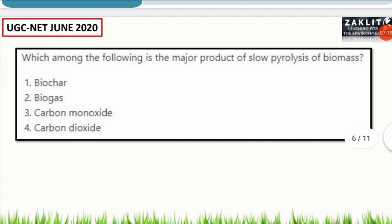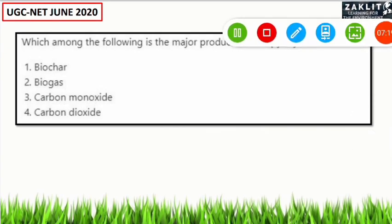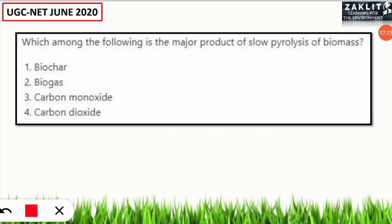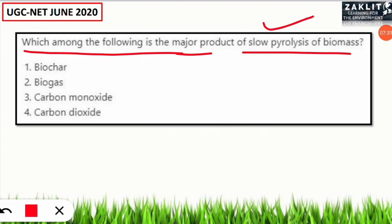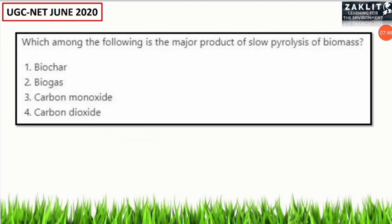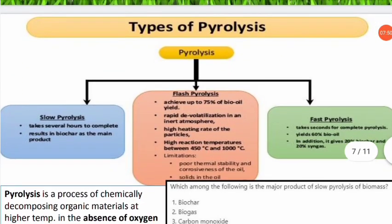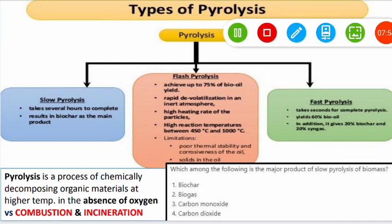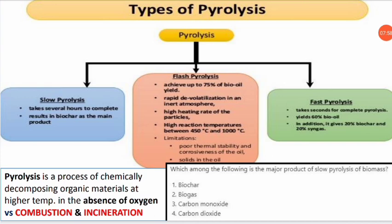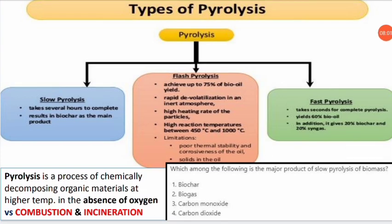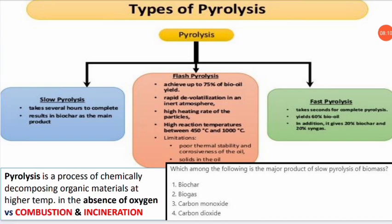The next question was from biomass burning. The question was: which among the following is the major product of slow pyrolysis of biomass? Emphasizing 'slow pyrolysis' because it is different from normal pyrolysis. The answer is number one — biochar. Slow pyrolysis is a process of chemically decomposing organic materials at higher temperature in the absence of oxygen.